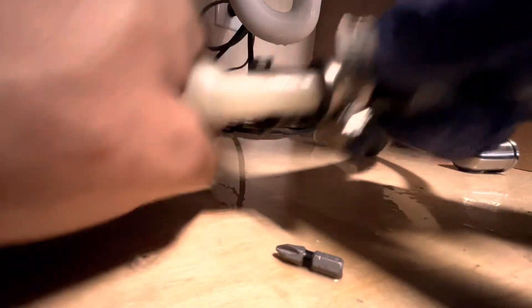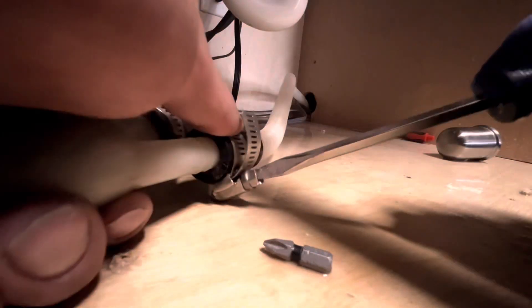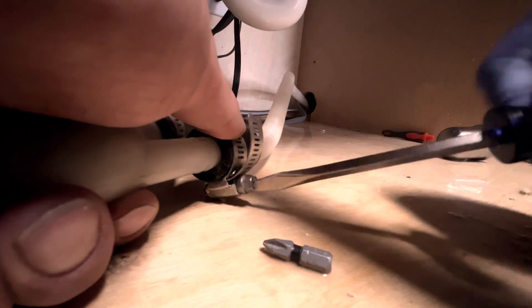Put everything back together. Put the vent back on the hose coming from the dishwasher. Make sure the clamps are tightened down securely.